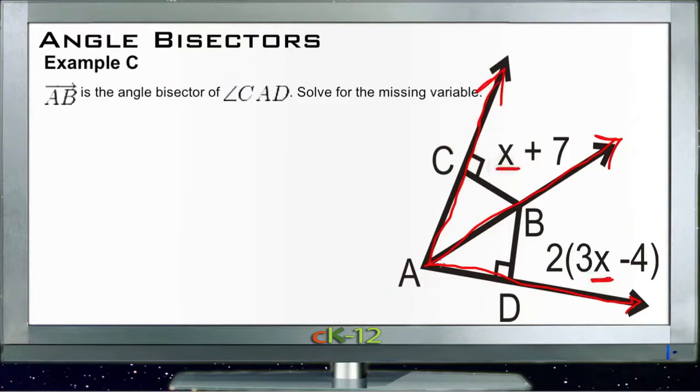Now if ray AB is the angle bisector as we're told, then that means that CB is congruent to BD, as in the last example. So that tells us that x plus 7 is equal to 2 times 3x minus 4.